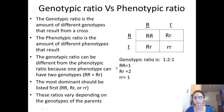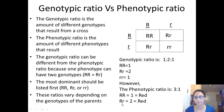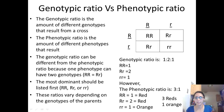The phenotypic ratio, however, is 3:1, which is different from the genotypic ratio. This is because the homozygous dominant genotype is red, and both heterozygous genotypes are also red — that gives us three red. The homozygous recessive genotype is orange, giving us one orange. So when we look only at phenotypes, we have three red and one orange, making the phenotypic ratio 3:1.